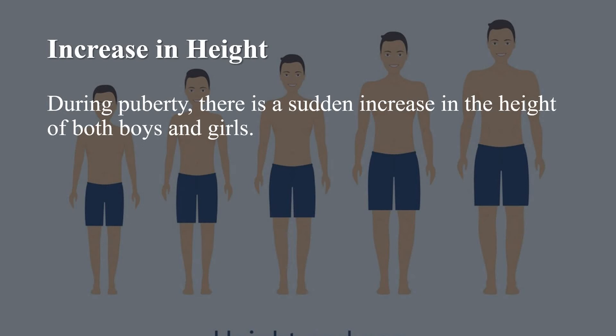The first change is increase in height. During puberty, there is a sudden increase in the height of both boys and girls. This occurs due to an increase in the length of the bones of the arms and legs. The rate of growth in height varies from person to person — some may grow rapidly at the start of puberty and then slow down, whereas others may grow gradually. Around 18 years of age, both boys and girls gain their maximum height. Height depends on genes inherited from parents and food habits during the growing period, so it is important to have nutritious food during these years to nourish the bones, muscles, and other parts of the body.